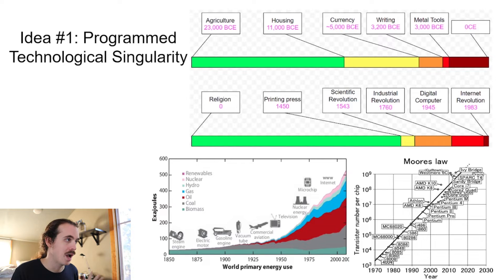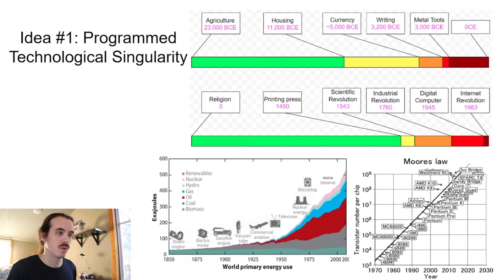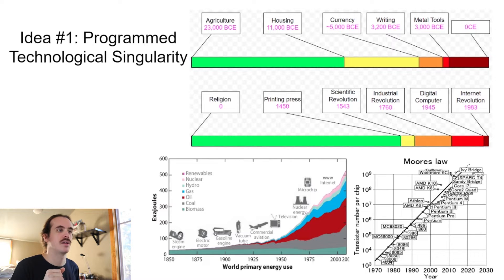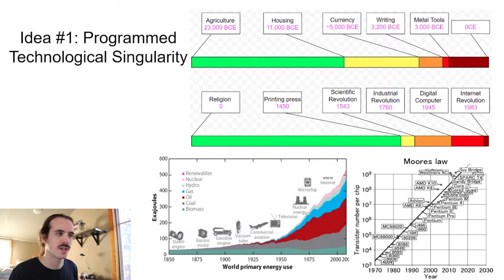So there are four main ideas, and this is idea number one: the idea of a programmed technological singularity. Why is it even possible to end poverty, end war, and solve science in the first place? The reason is that Earth is a singularity system - civilization as a whole has been exponentially compounding its technological advancement, and with each new invention the efficiency of the entire system gets faster and faster.